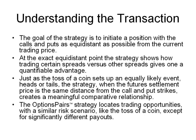The goal of this strategy is to initiate a position with the calls and puts as equidistant as possible from the current trading price. At the exact equidistant point, the strategy shows how trading certain spreads versus other spreads gives one a quantifiable advantage. Just as the toss of a coin sets up an equally likely event — heads or tails — the strategy, when the future settlement price is the same distance from the call and the put strikes, creates a meaningful comparative relationship. The options pair strategy locates trading opportunities with a similar risk scenario, like the toss of a coin, except for significantly different payouts.